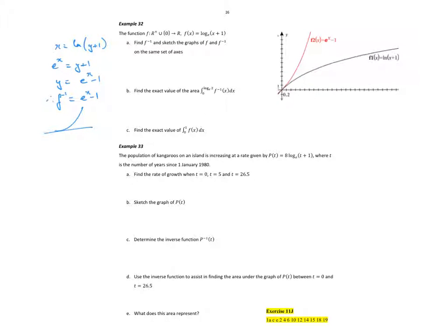Let's add a more accurate graph. Find the exact value of the area between 0 and natural log 2 of f inverse of x. So f inverse of x is our e to the x graph. The integral between 0 and natural log 2 of f inverse, which is e to the x minus 1, dx. That equals e to the x minus x, between 0 and natural log of 2.